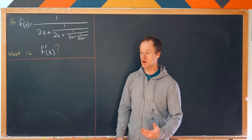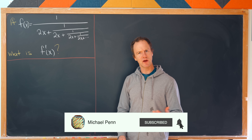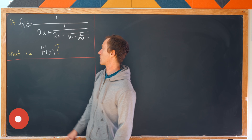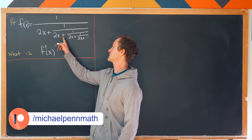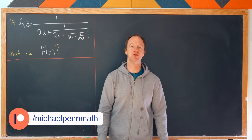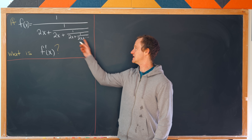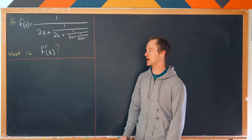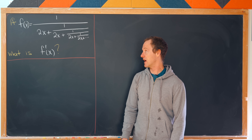Today I've got a nice problem involving a function which is defined in terms of a continued fraction. In particular we want to look at the function f(x) which is 1 over 2x plus 1 over 2x plus 1 over 2x, continued on and on and on. Our goal is to find the derivative of f.